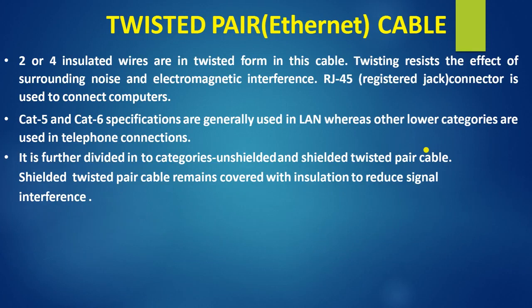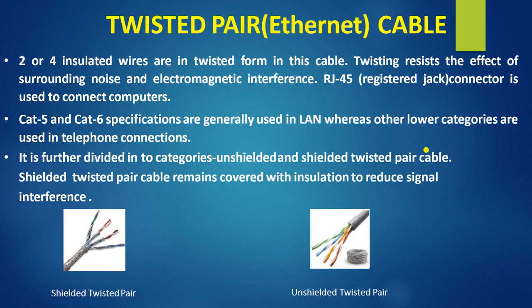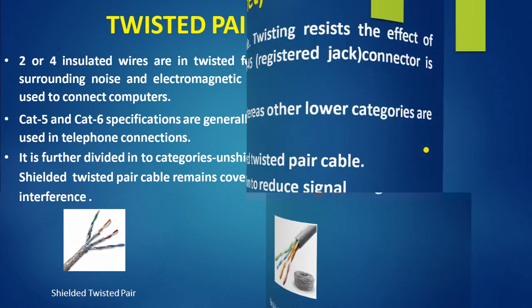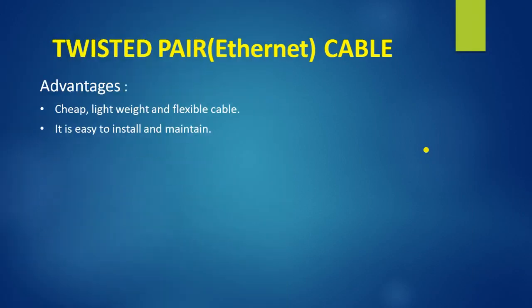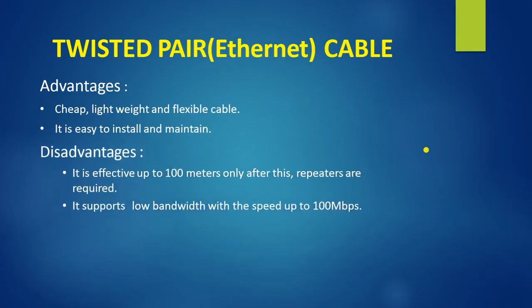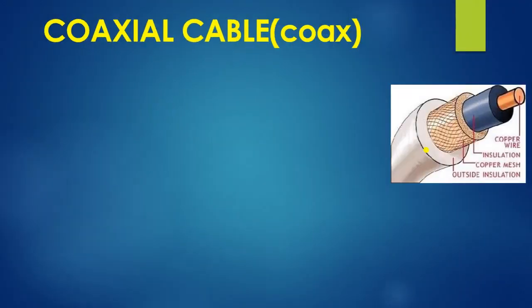Twisted pair cable — these are pictures of twisted pair cable. Category 5 and Category 6 are generally used in LAN. Advantages: it is cheap, lightweight, flexible, easy to install and maintain. Disadvantages: it is effective only up to 100 meters; beyond this, repeaters are needed, and it supports a low bandwidth with speed up to 100 Mbps.